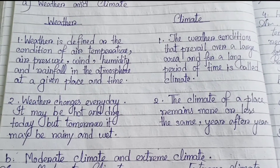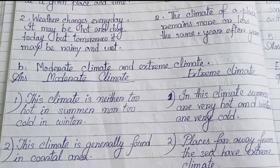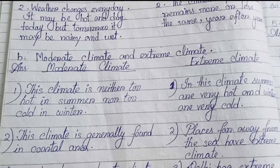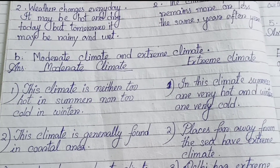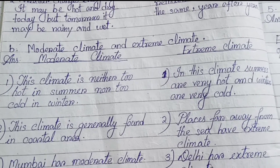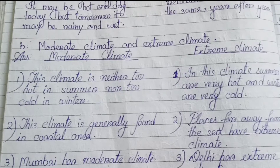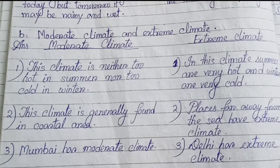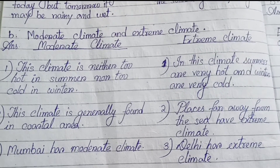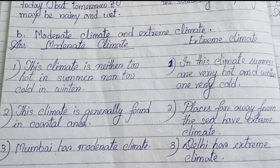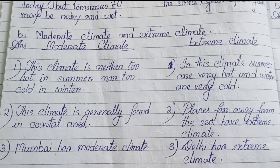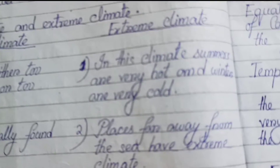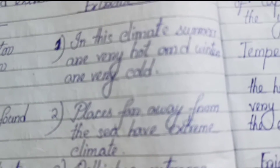(b) Moderate climate and extreme climate. Moderate climate: this climate is neither too hot in summer nor too cold in winter. This climate is generally found in coastal areas. Mumbai has moderate climate. Extreme climate: in this climate, summers are very hot and winters are very cold. Places far away from the sea have extreme climate. Delhi has extreme climate.